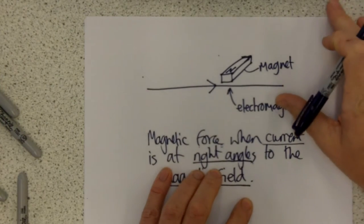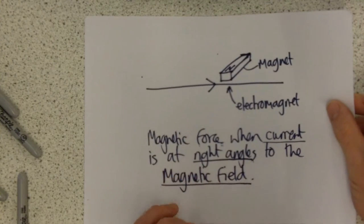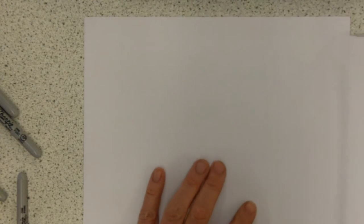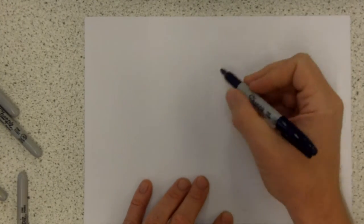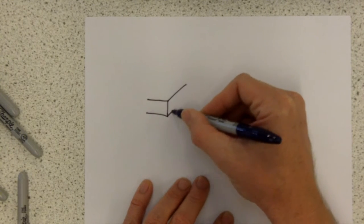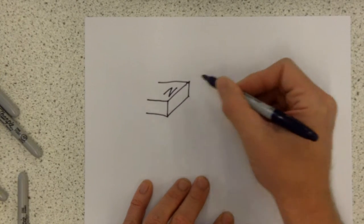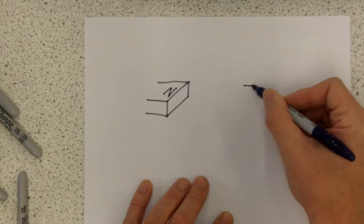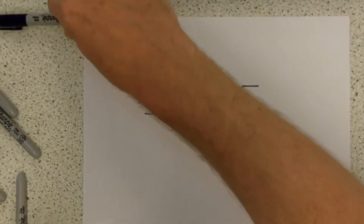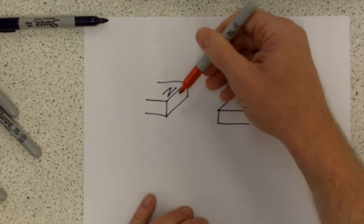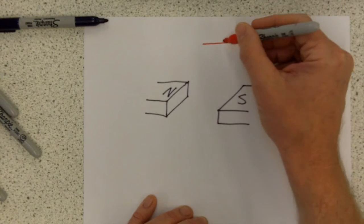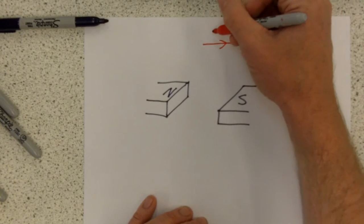Now because of that, we can utilize that force to make a motor. So a motor works in the following way. I'm going to attempt to draw one here. You always need a magnetic field. So here's my north pole magnet and I'll put a south pole magnet over here. So the important thing always is you have a magnetic field. Now that magnetic field, I won't draw the flux lines in, but they go from north to south, so the magnetic field is in this direction.